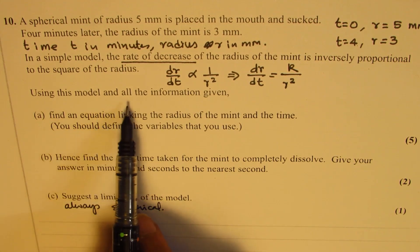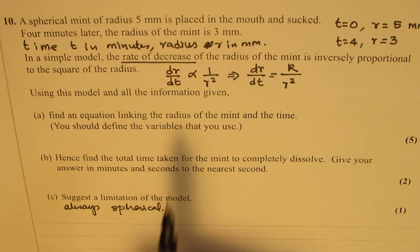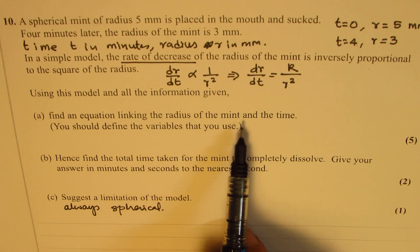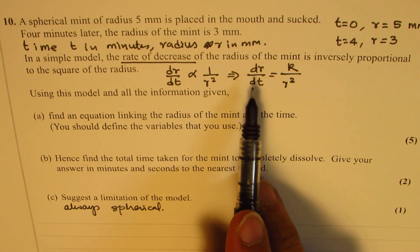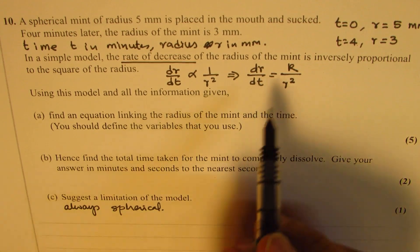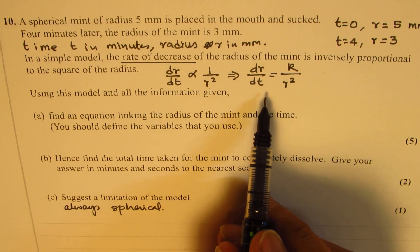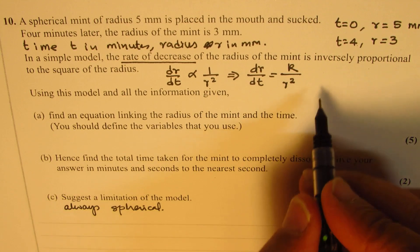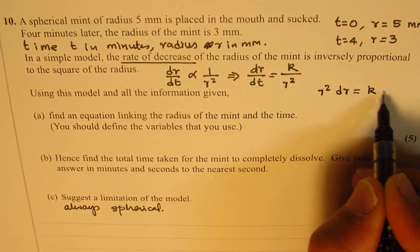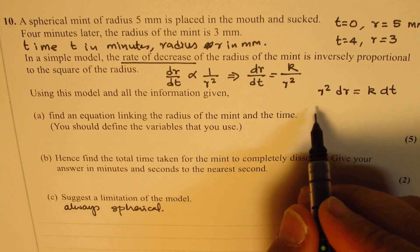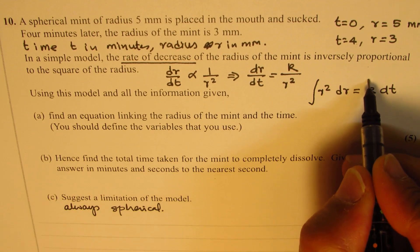Using this model and all the information given, find an equation linking radius of the mint — we want r and t. We have dr/dt, so we need to integrate — that's the differential equation. Let's cross multiply: r² dr equals k dt. Then we can integrate on both sides.